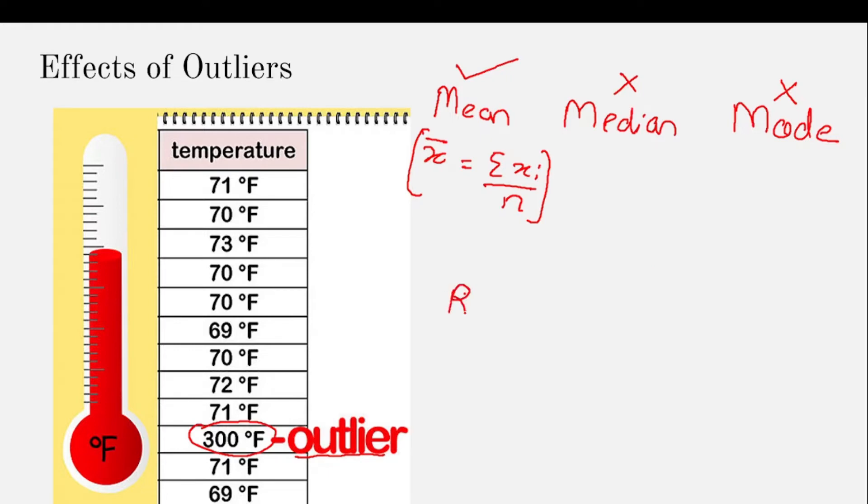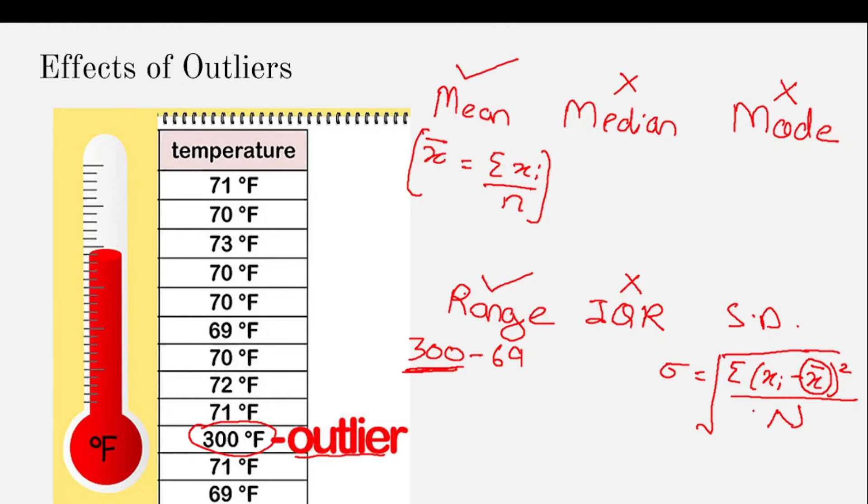Under the measures of variability, we have seen range, IQR, and standard deviation. In this case, my range will become highest value minus the lowest value, which is minus 69. Since range is taking into account the outlier value, hence range is also affected by outliers. IQR deals with the middle 50% of the data, hence it is not affected by outliers. Now let's see if standard deviation is affected by outliers or not. Standard deviation sigma is given by the formula square root of summation of xi minus x bar whole square by the number of data points. Since we can clearly see that standard deviation depends upon the value of mean, which is affected by outliers, hence standard deviation is also affected by outliers.